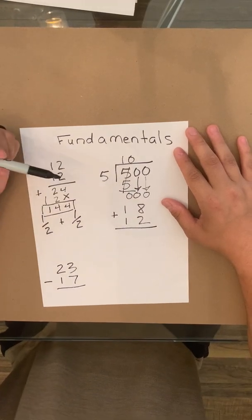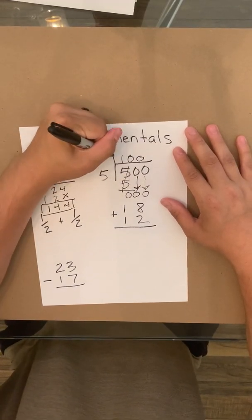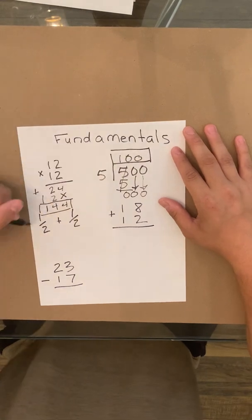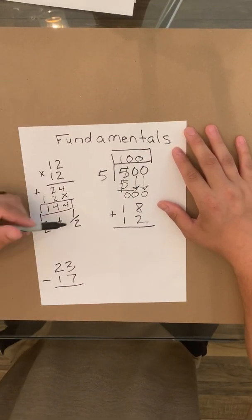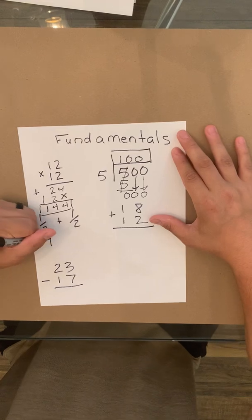5 still can't go into 0 any times, so that makes your answer 100.